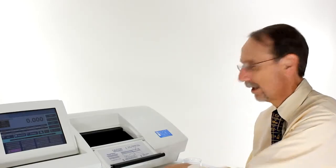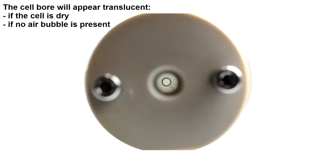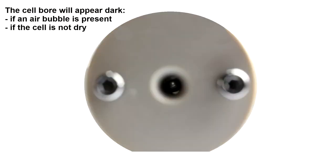First check that the cell is empty and dry. The easiest way to do this is to look down the cell, hold it up to the light and look along the bore.